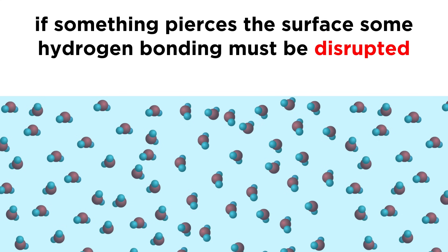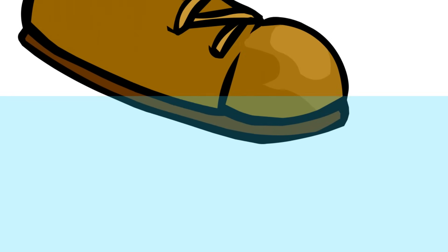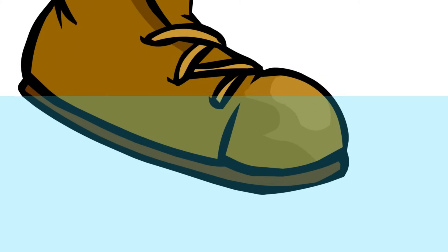If an object like a bug were to pierce the surface of the water, some of the hydrogen bonds would have to be disrupted, as some of the volume would then be occupied by something other than water molecules. That is why the surface of any body of water can act almost like a stretched rubber membrane, if the object interacting with the surface is sufficiently light. Of course, if a human tries to walk on water, their mass is such that gravity will win over the cohesive forces, so don't try this at home.